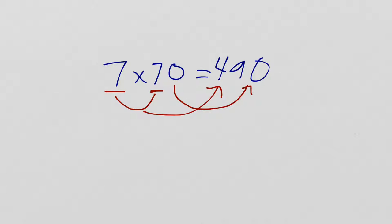And this will work for any problem where you're multiplying a single digit number by something that you could get to in a count by 10s, a multiple of 10. So, we could count by 10s to get to 70. So, this works. Let's do another example.